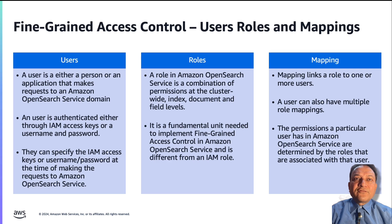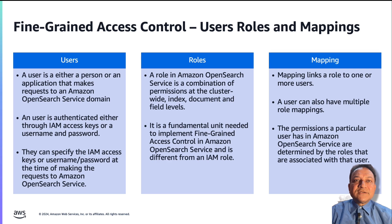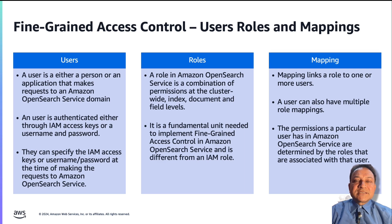A user is either a person or an application that makes requests to an Amazon OpenSearch Service domain, authenticated using IAM access keys or a username and password combination. A role in Amazon OpenSearch Service is a combination of permissions at the cluster-wide, index, document, and field levels — it is a fundamental unit of fine-grained access control and is different from an IAM role. A mapping links a role to one or more users; a user can also have multiple role mappings, and the permissions a user has are determined by the roles associated with that user.